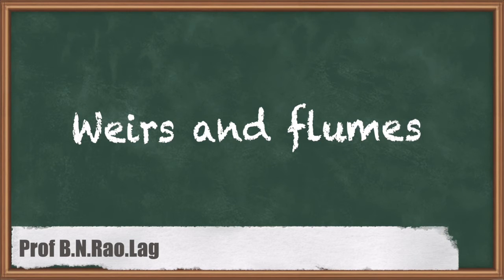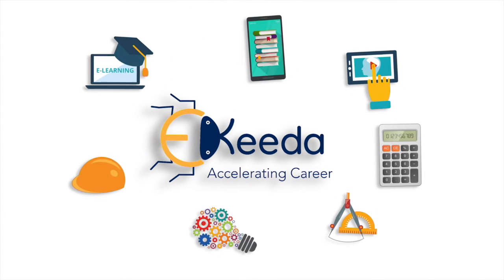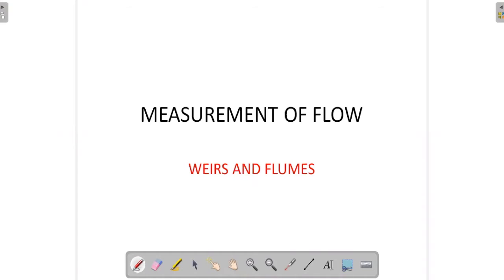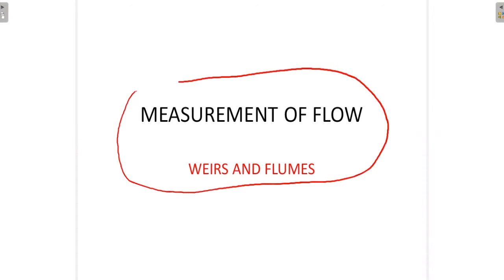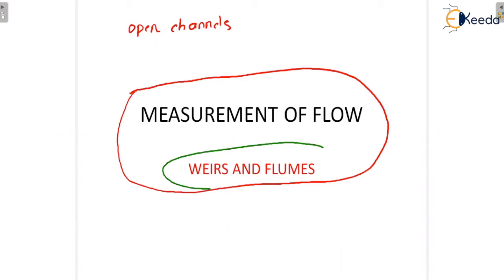Welcome students. In this session we are going for one more device for the measurement of flow. This device is used for the measurement of closed channel. Now we are entering into the open channel measurements. For measuring the flow in open channel measurements, we are going for the very important method — weirs and flumes.